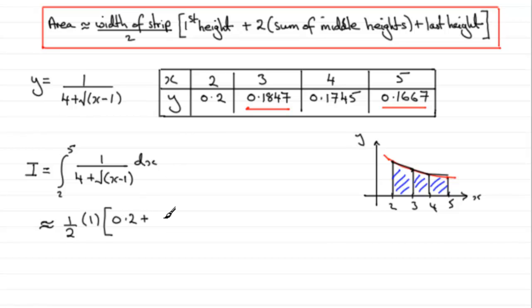Then it's plus twice the sum of all the middle heights, that'll be these two y values, so that'll be 0.1847 plus the next y value, 0.1745.